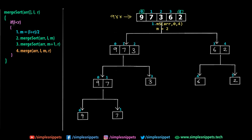The condition L < R checks whether we've reached the smallest sub-array with only one element. When L equals R, this condition becomes false and recursion stops. Since 0 < 4 is true, we proceed. Step 1: calculate the midpoint. M = (L + R) / 2 = (0 + 4) / 2 = 2. So the midpoint is 2. Now Step 2 is calling Merge Sort again — this is a recursive call.